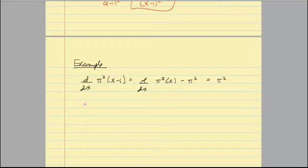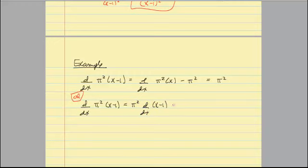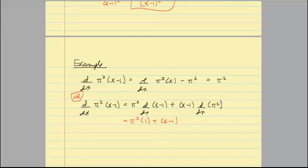Or I could use the product rule. The first function times the derivative of the second plus the second function times the derivative of the first. Dragging along pi squared, the derivative of (X minus 1) is 1. Dragging along (X minus 1), the derivative of a constant is 0, so that whole term goes to 0 and I'm left with pi squared. Both methods match.